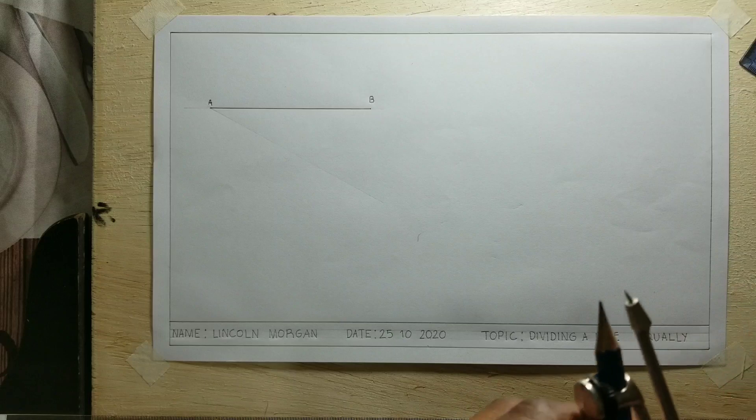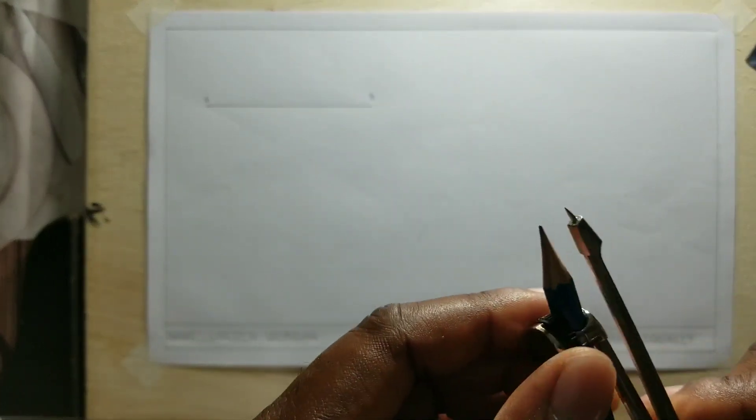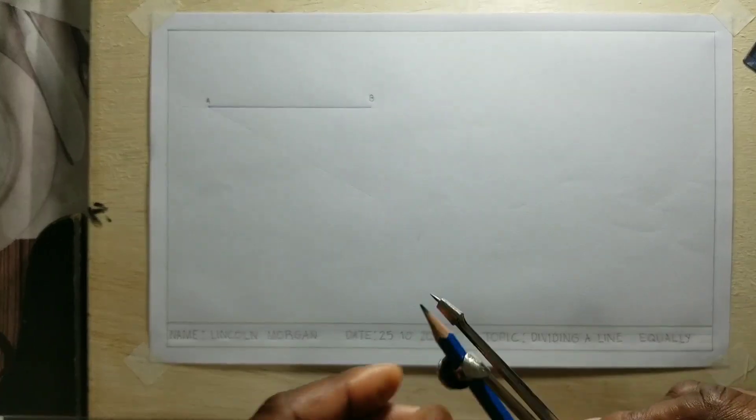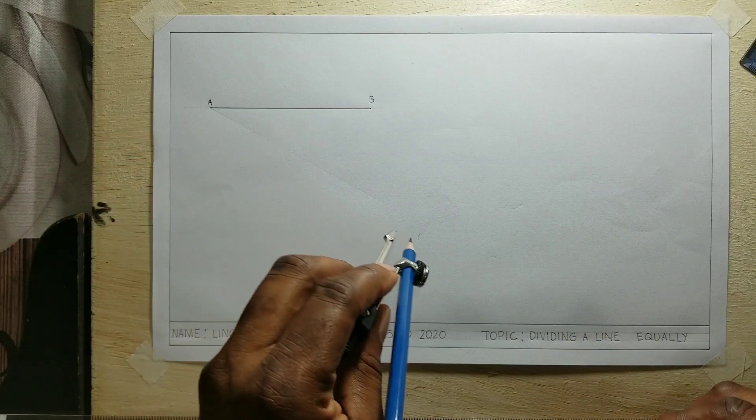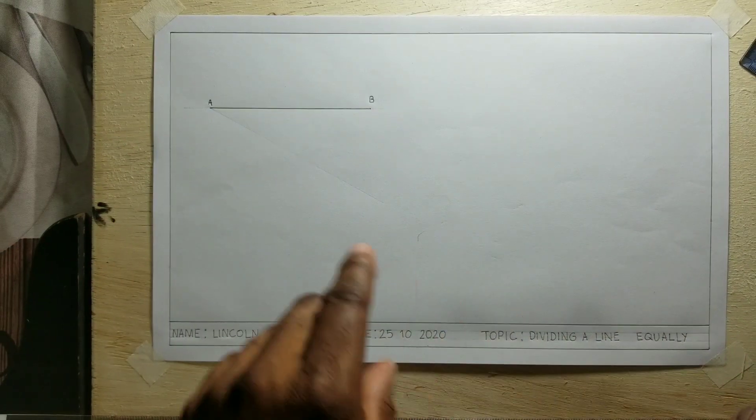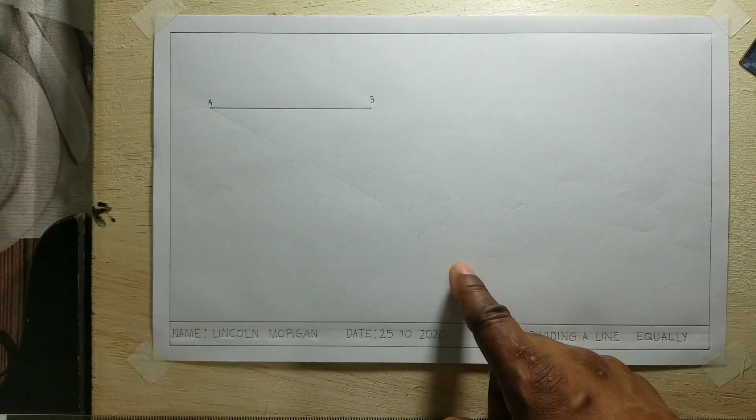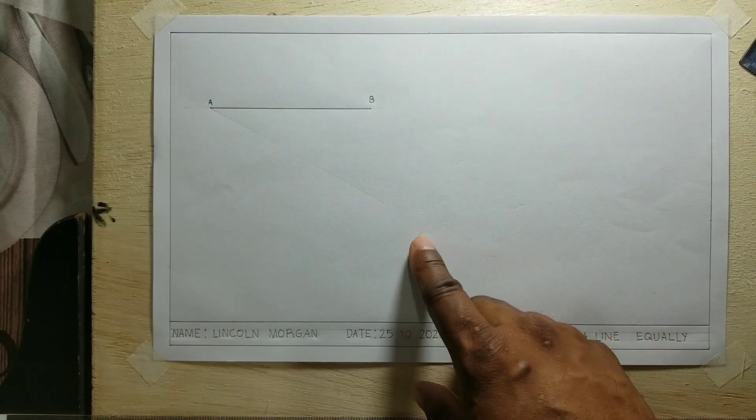Now I will open my compass to a convenient radius, not big, but a small convenient radius, one that I think I can get at least 10 marks on this line. If I'm unable to get 10 intervals on this line, then I will have to extend this line down more.